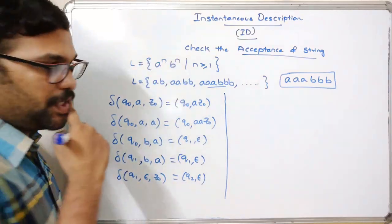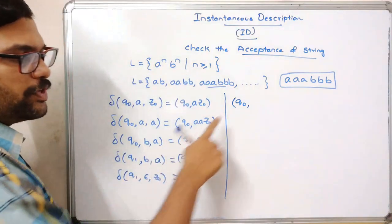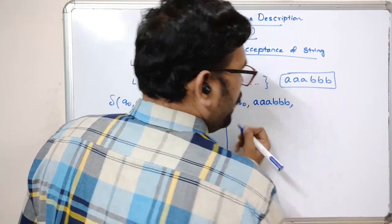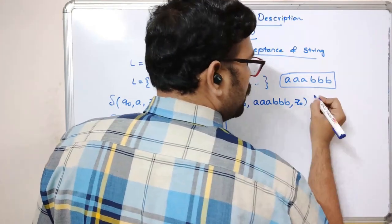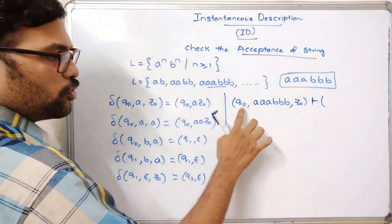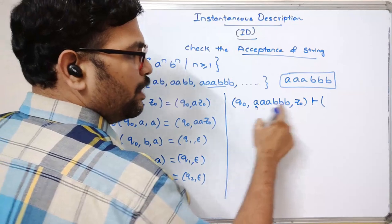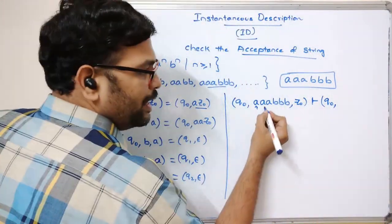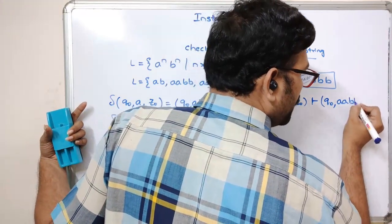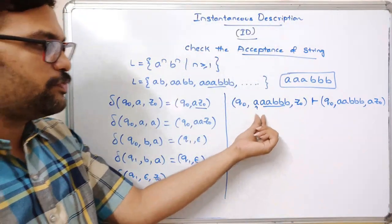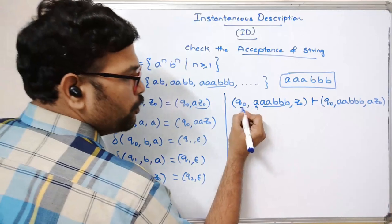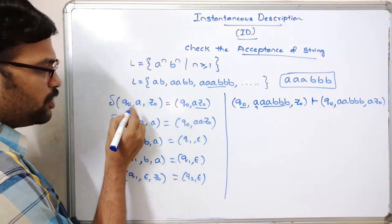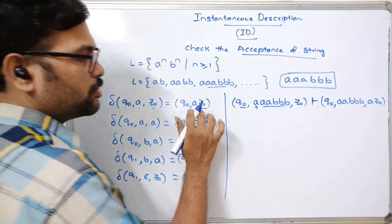We represent the string as a triple: current state q0, input string 'aaabbb', and initial stack content z0, using turnstile notation. Applying the transition: q0 on input 'a' with stack top z0 gives q0 — we push 'a', so the remaining input is 'aabbb' and the stack becomes 'az0'. Next, q0 on 'a' with stack top 'a' gives q0 again, pushing another 'a'.